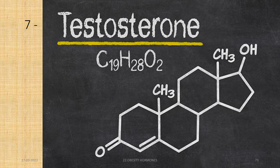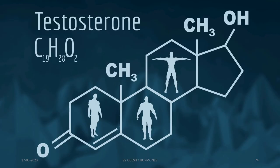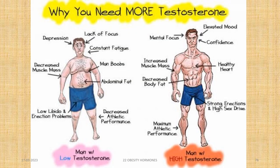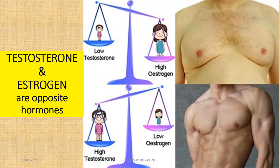Testosterone is our masculinity hormone, also known as the macho-man hormone. Like growth hormone, testosterone makes muscles and bones very strong and gives an athletic appearance. Low levels of testosterone lead to obesity and a feminized look, whereas high levels lead to a masculine and athletic look. Testosterone and estrogen are opposite hormones — like insulin and growth hormone.